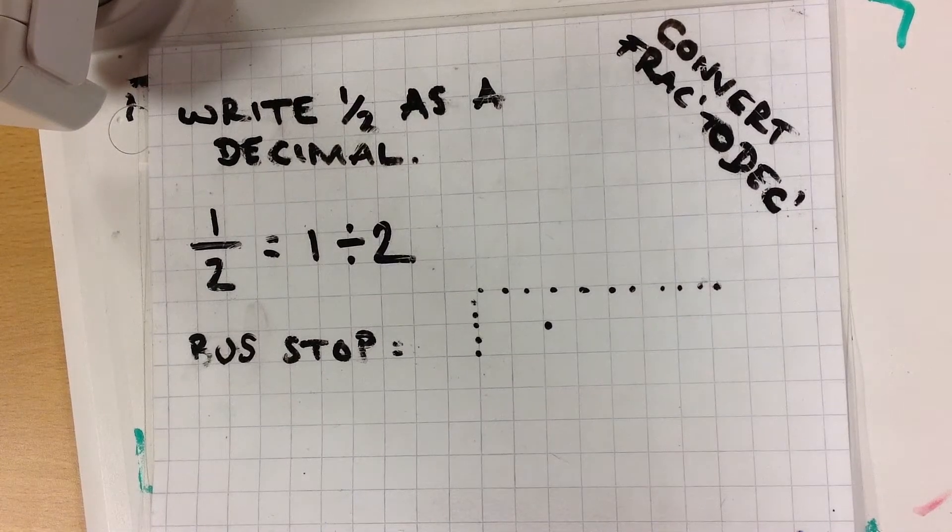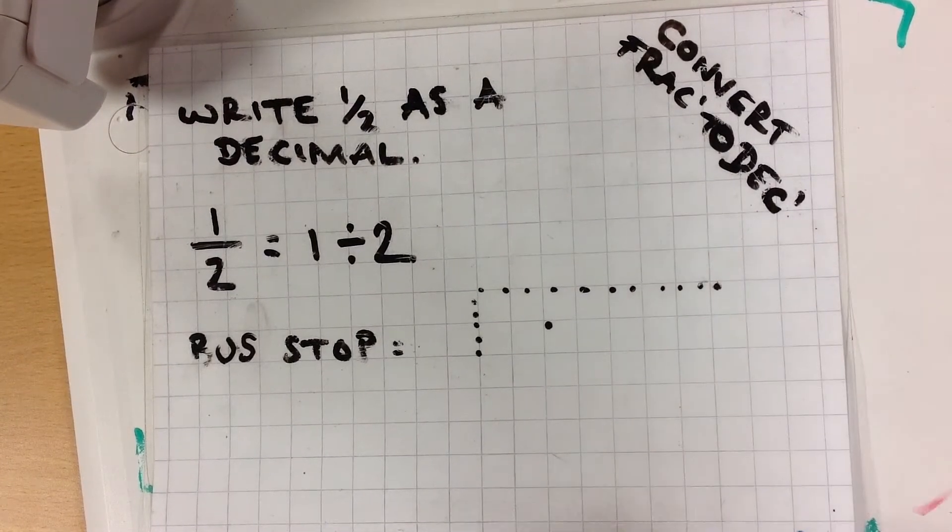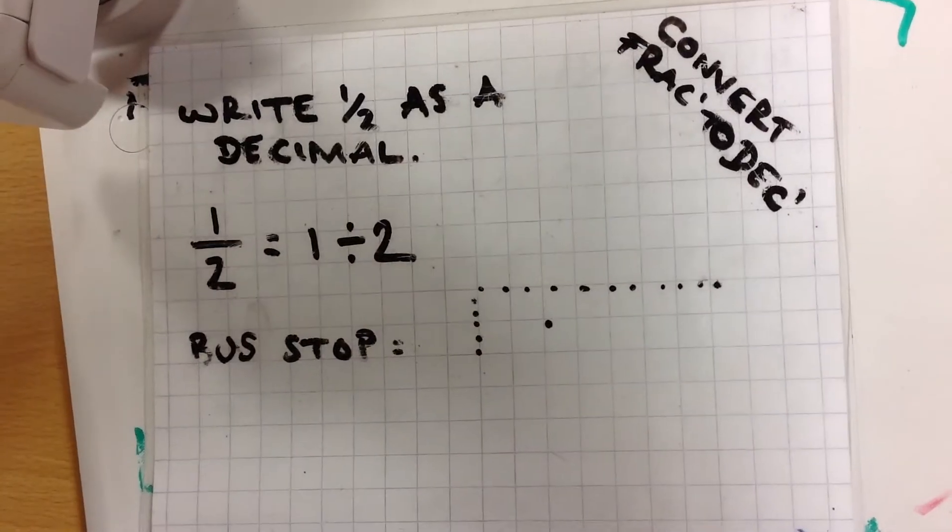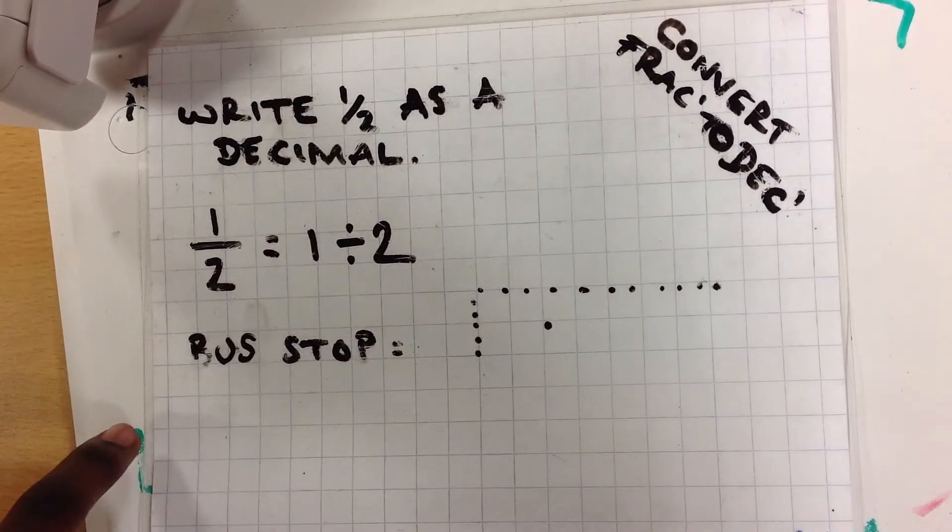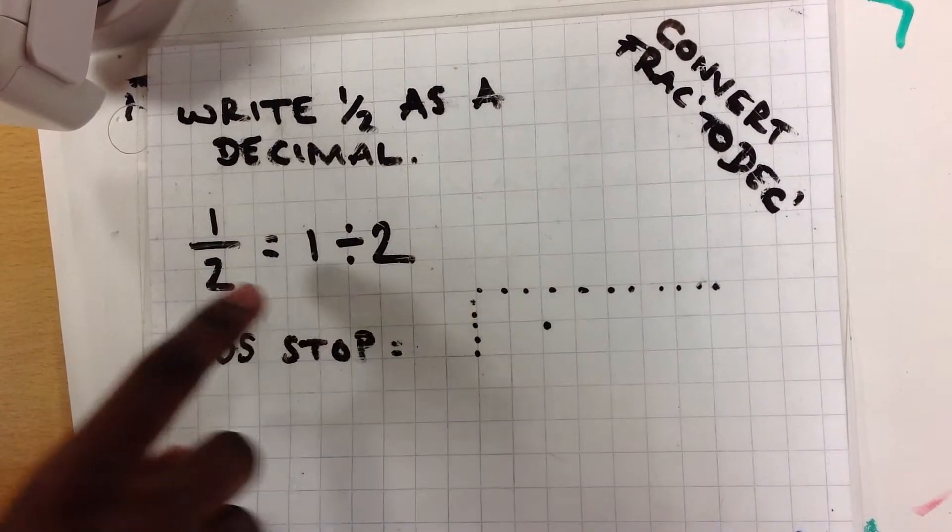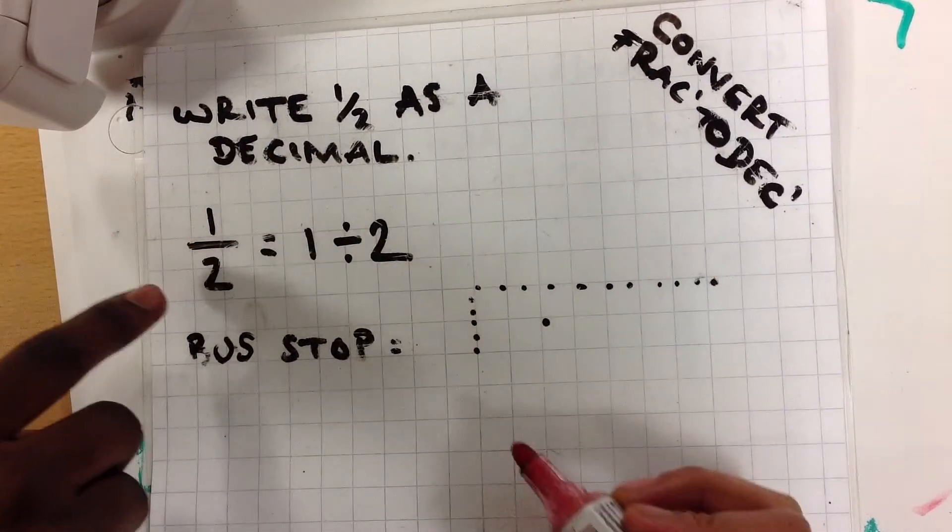This video will help you convert fractions into decimals. This fraction here will be read as 1 divided by 2, as shown here. 1 divided by 2.